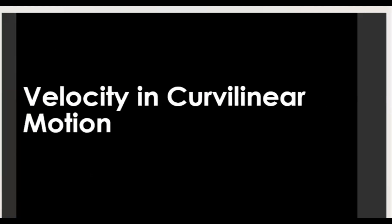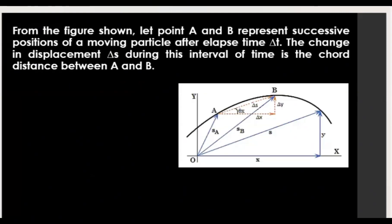Let's discuss velocity in curvilinear motion. Let point A and B represent the successive positions of a moving particle after elapsed time delta T. The change in displacement delta S during this interval is the chord distance from A to B. Since S is x plus y, we can say delta S equals delta x plus delta y in vector sum form.